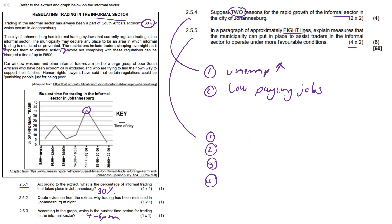Explain measures that the municipality can put in place to assist traders in the informal sector to operate under more favorable conditions. Well, they can simply regulate the informal sector and allocate space near markets.